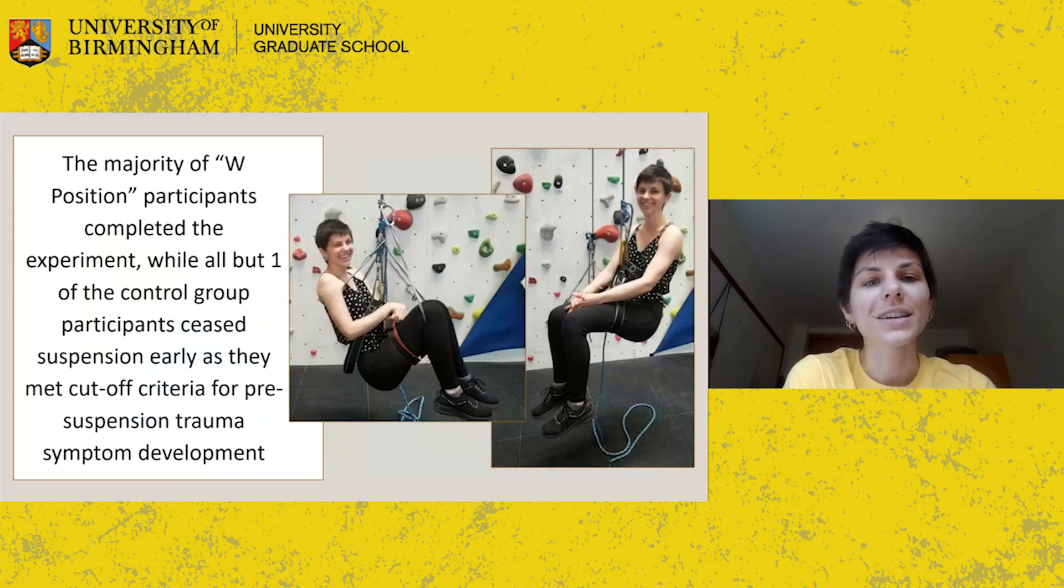In my experiment, participants hung in rock climbing harnesses at the University of Birmingham climbing wall in either the interventional W position, displayed on the left, or in the neutral control position, displayed on the right. Participants' heart rates, blood pressures, oxygen saturations, pain ratings, and the amount of venous pooling in their lower legs was measured, as these variables in combination may contribute to suspension trauma.